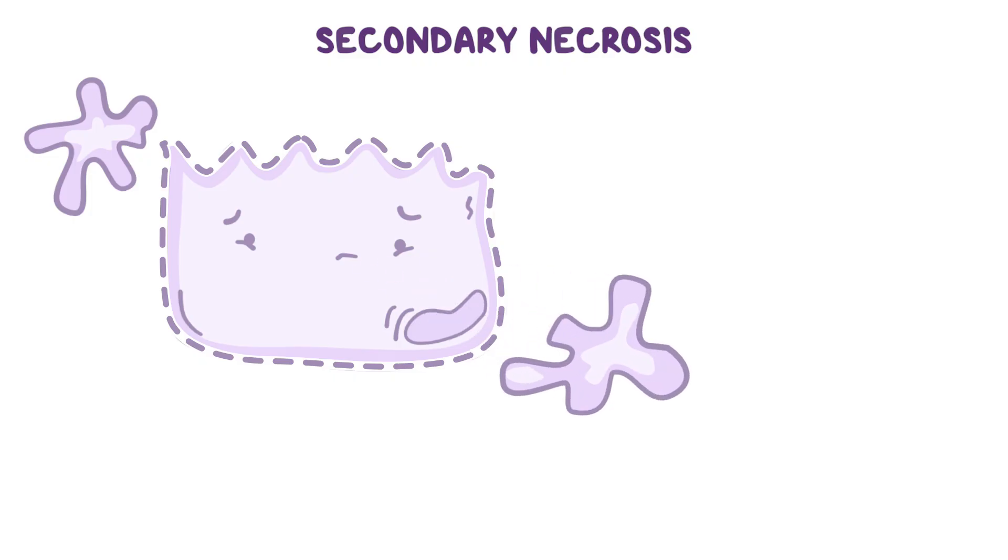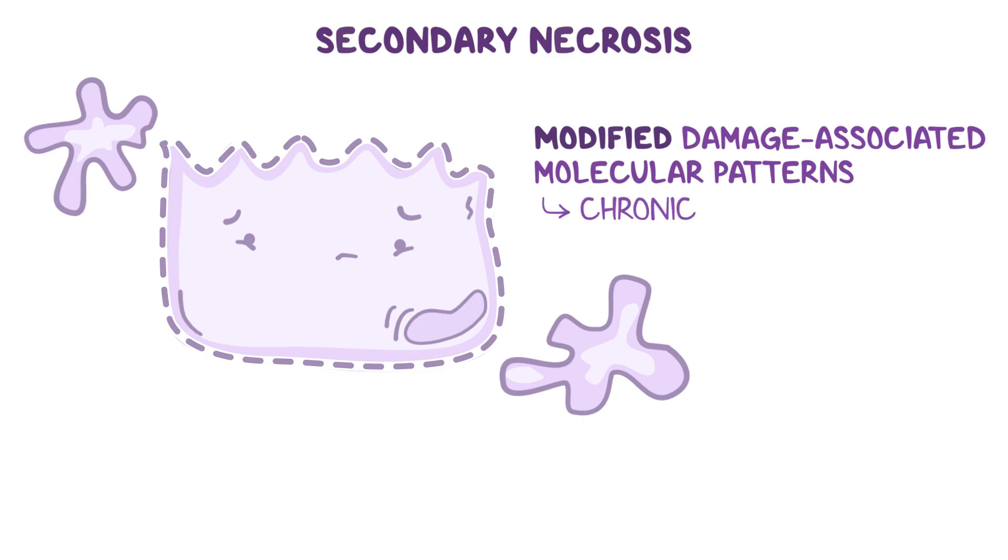In contrast to primary necrosis, where damage-associated molecular patterns induce a strong inflammatory response, during secondary necrosis, apoptotic cells release modified damage-associated molecular patterns that typically result in chronic inflammation.